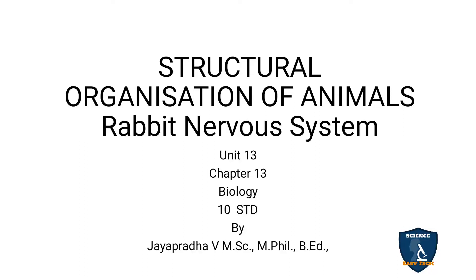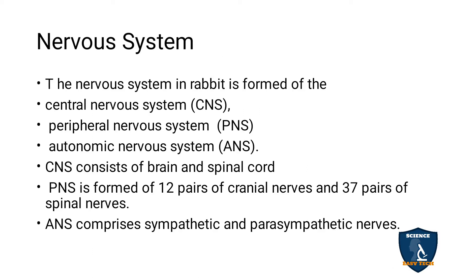We are going to discuss the rabbit nervous system in structural organization of animals. The nervous system comprises of brain, spinal cord, and the entire nerves. In rabbit, the nervous system is formed of central nervous system, peripheral nervous system, and autonomic nervous system — like ours, the rabbit also has three types of nervous system.